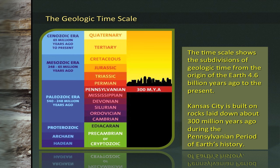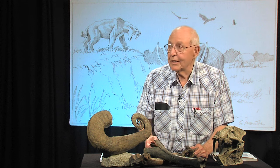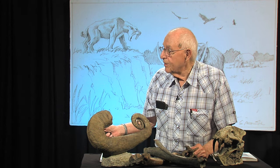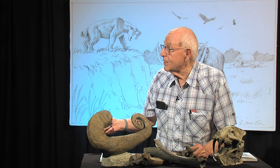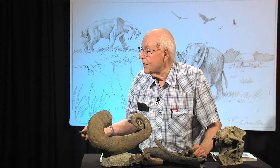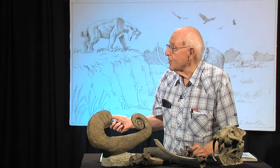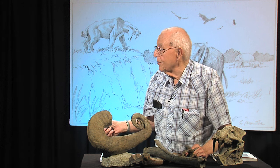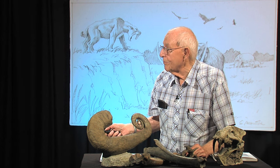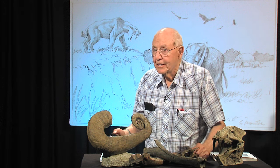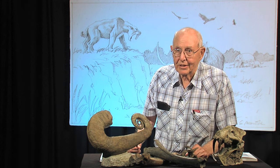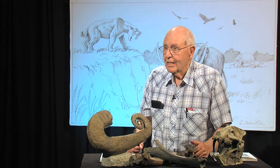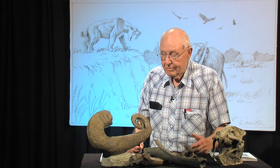Let's put all of this into a time frame. Everything discussed up until now — the rocks and the types of creatures that lived — occurred during what we call the Pennsylvanian System. We're going back about 300 million years. This is the geologic timescale, showing divisions of geologic time from the origin of the Earth 4.6 billion years ago to the present. Kansas City is built on rocks laid down about 300 million years ago during the Pennsylvanian period. At that time there were mostly invertebrates, no flowering plants, and the reptiles were just beginning their reign.